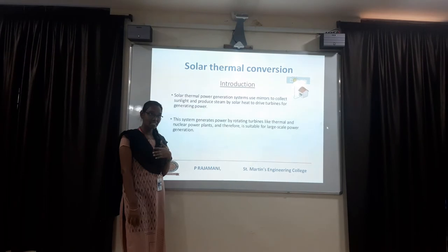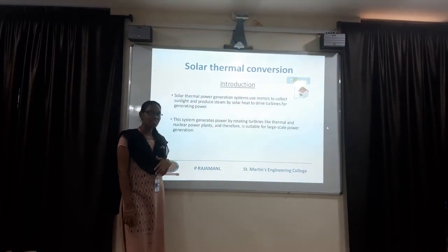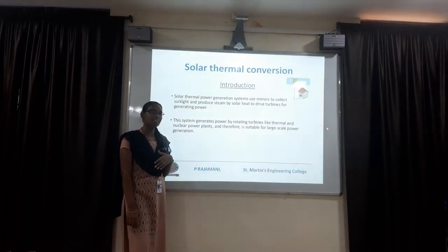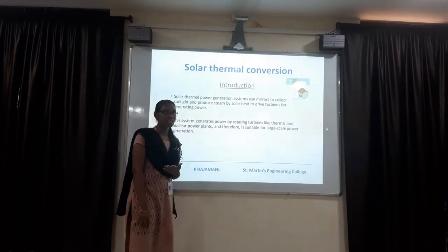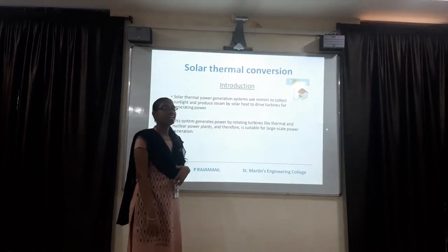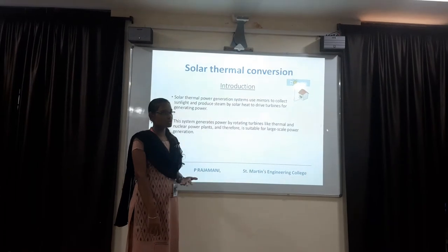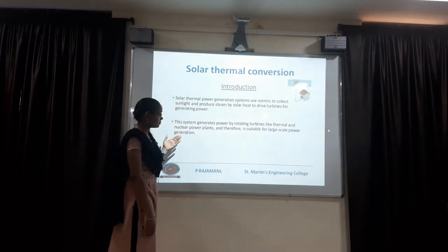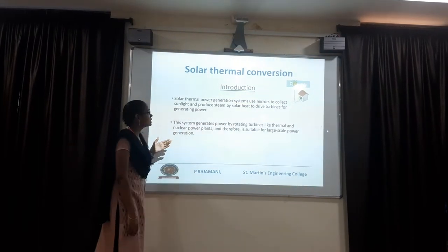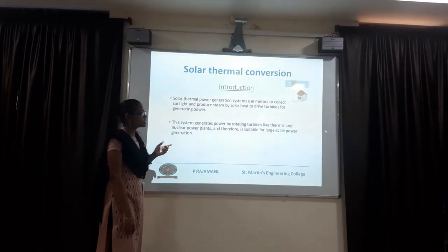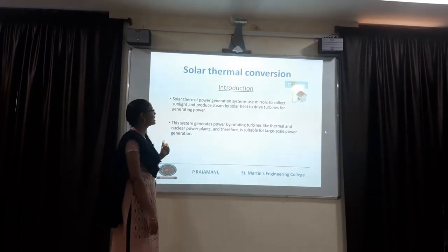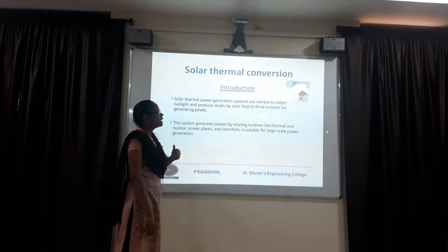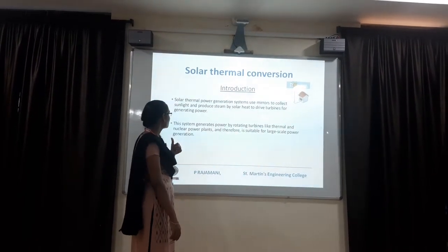In renewable energy sources, we basically get electrical energy. It is defined as getting electrical energy from natural sources. The solar thermal power generation system is used to collect sunlight and produce steam by solar heat, to drive turbines for generating power.